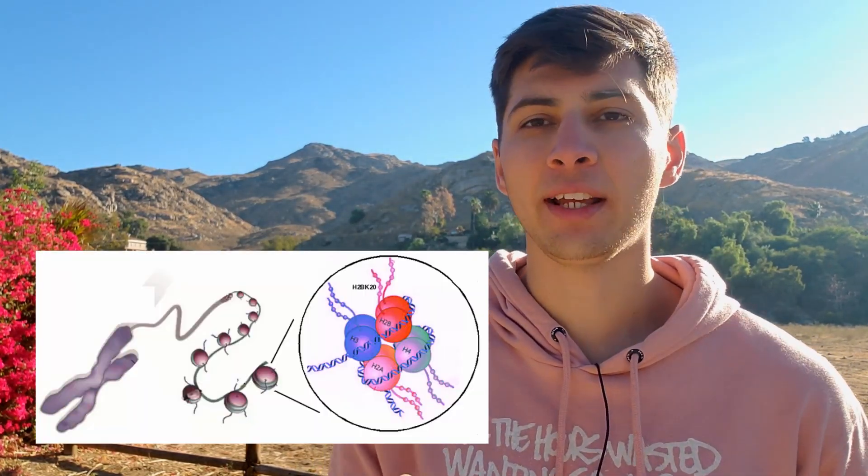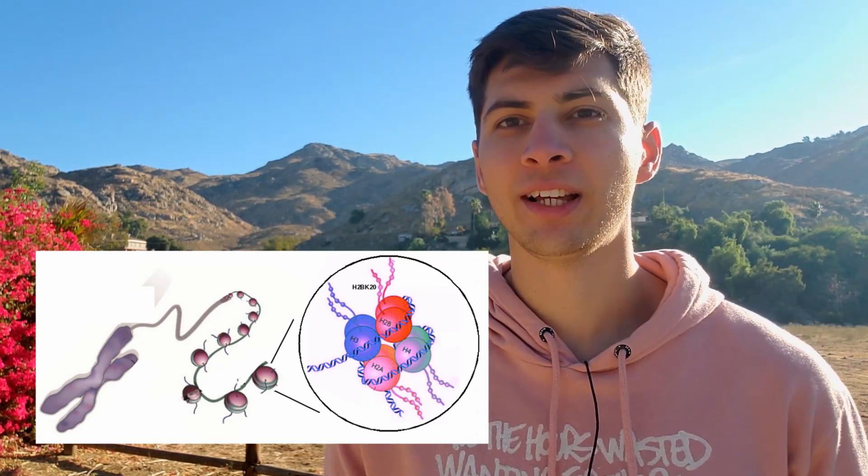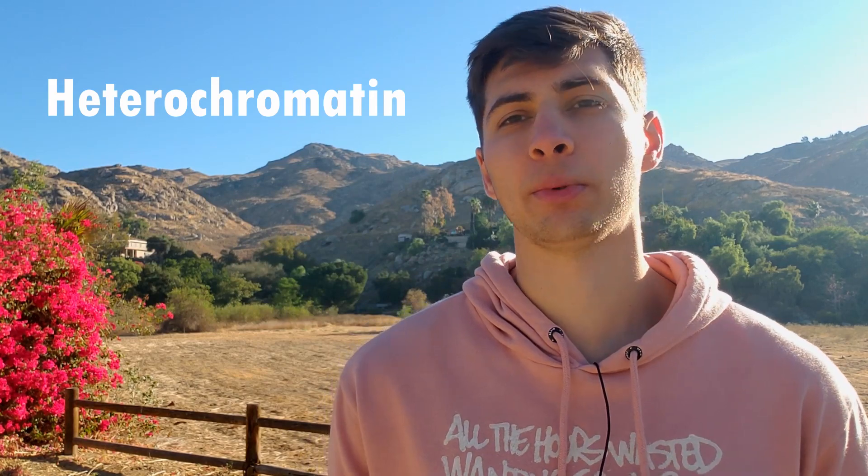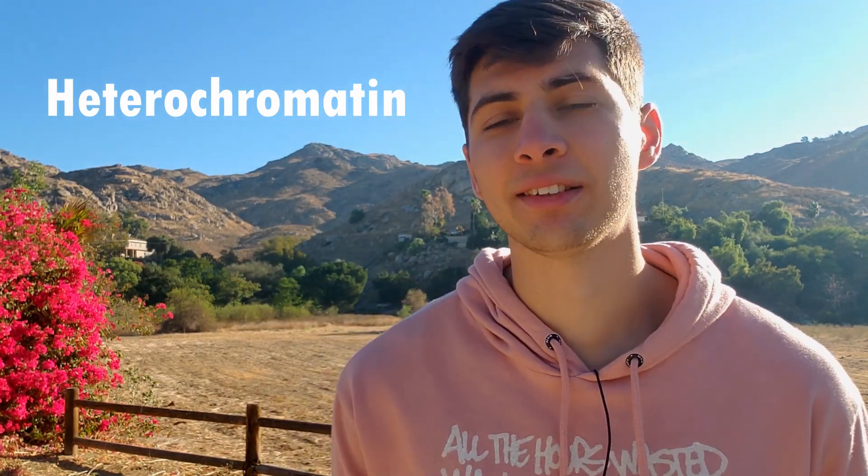The second mechanism of epigenetics or gene regulation is something called histones. A histone is an octamer, meaning eight subunits — just eight chunks — and DNA is wound around these eight subunits. If this DNA is wound tightly around the histone, it's considered heterochromatin, or closed, and it effectively silences the gene being wrapped around the histones. This heterochromatin, or closed chromatin, is not accessible to your transcriptional machinery in the cell, so the gene is effectively silenced — though usually not completely silenced.